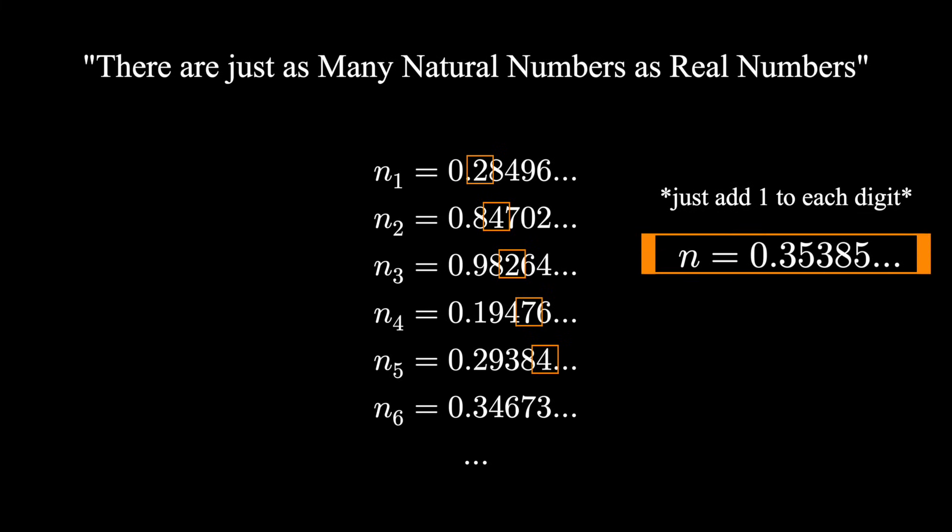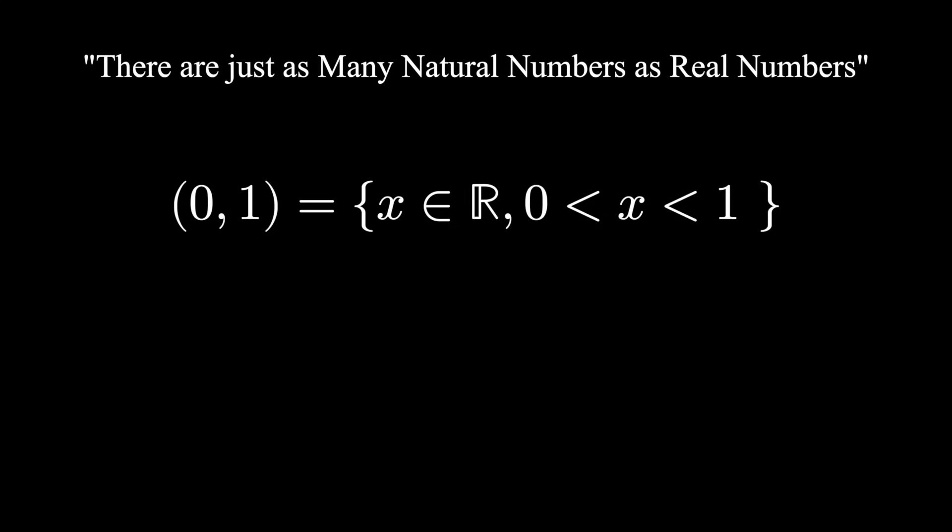This number is not on the list because it's not the first number, it's not the second number, it's not the third number, and so on. We've created a number which is in the set zero to one, but not on the list. This set is uncountably infinite. And in a sense, there are more numbers between zero and one than there are natural numbers.